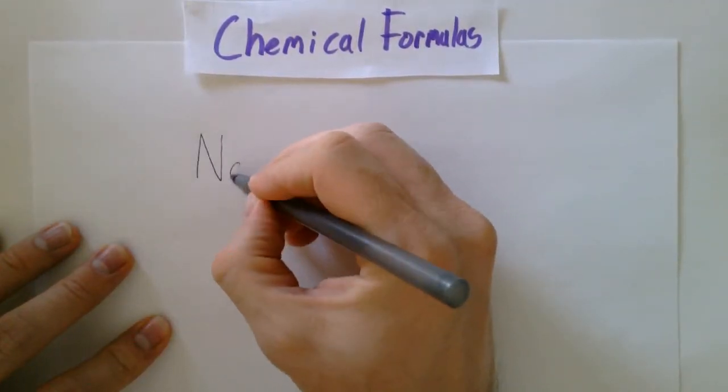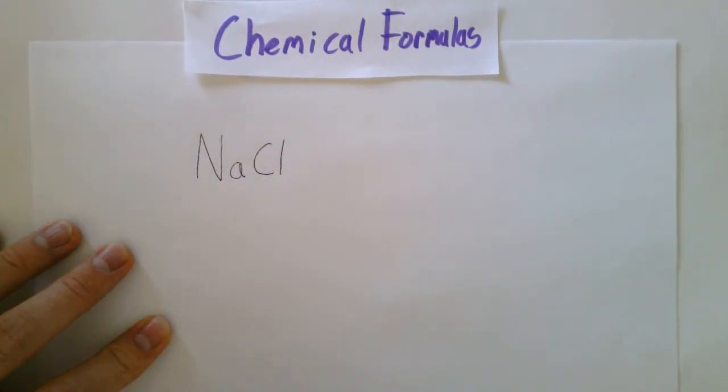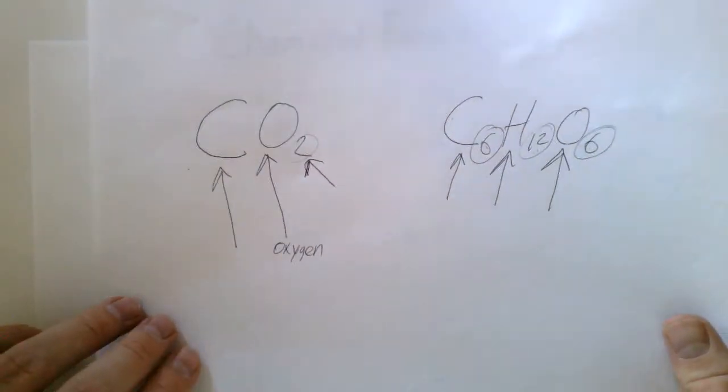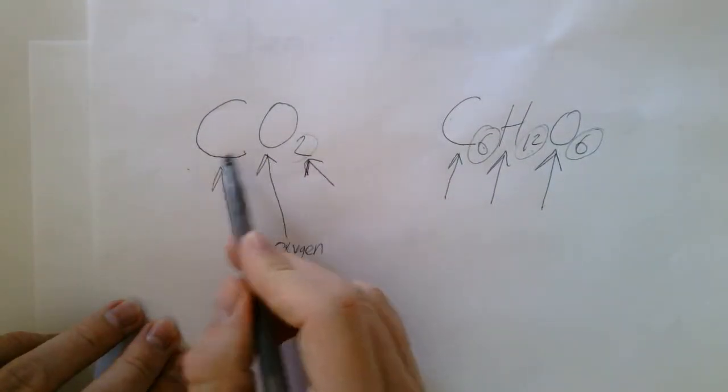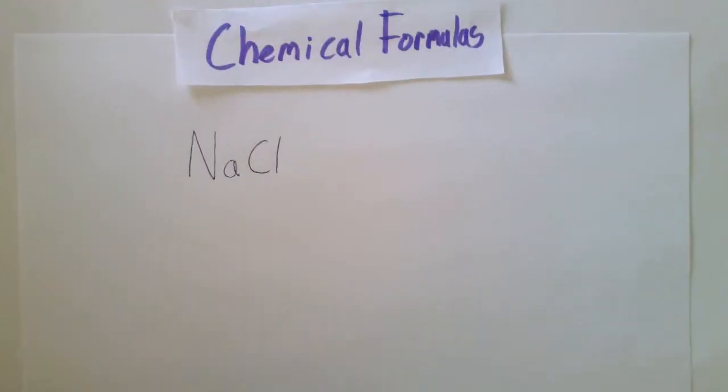This is the chemical formula for sodium chloride, also known as table salt. Now the formulas we previously saw, so these ones, you can see that each of these symbols was just one letter. But there's many elements on the periodic table, so often we have to use two letters.